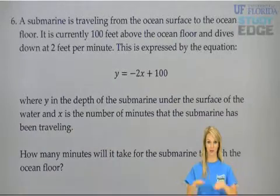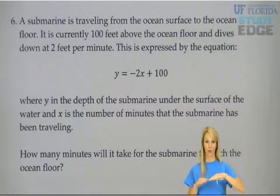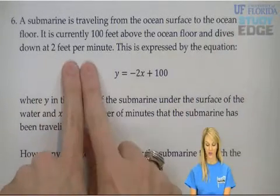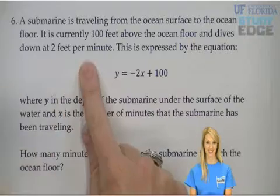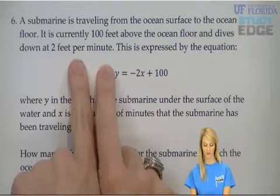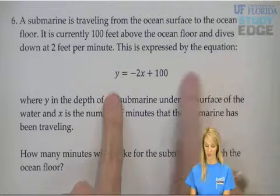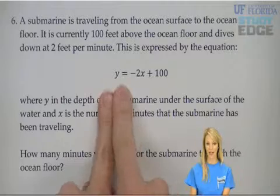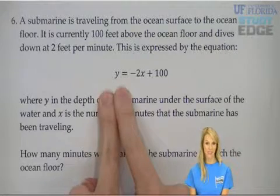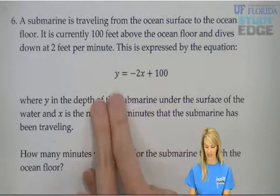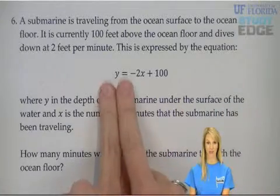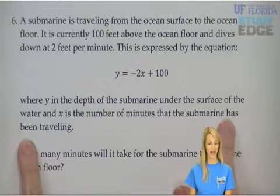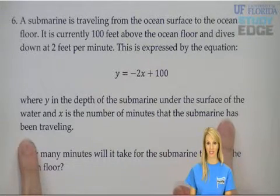The ocean floor is the bottom of the ocean. We are 100 feet above that ocean floor, and the submarine is going down at 2 feet per minute — it's descending deeper into the water. That is expressed by the equation y equals negative 2x plus 100, where y represents the depth of the submarine — how many feet above the ocean floor it is — and x is the number of minutes that the submarine has been traveling.